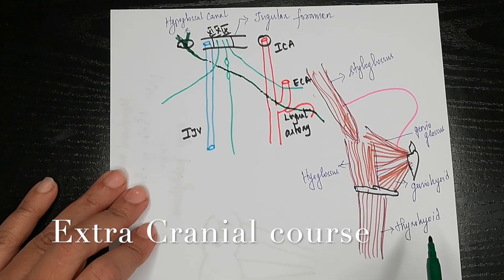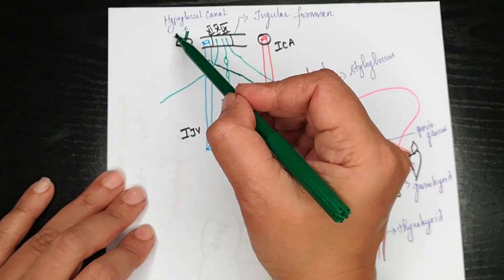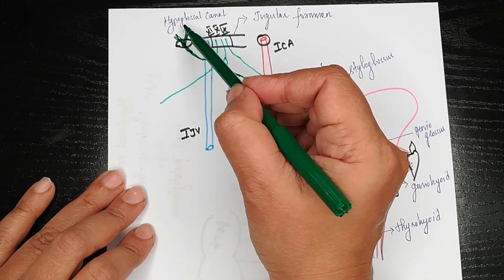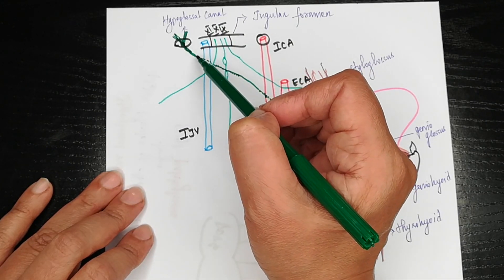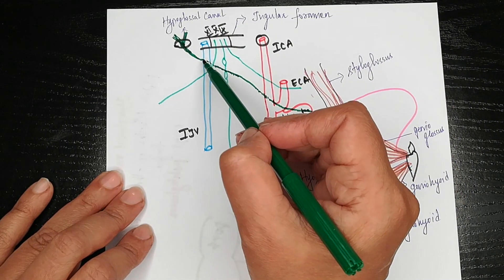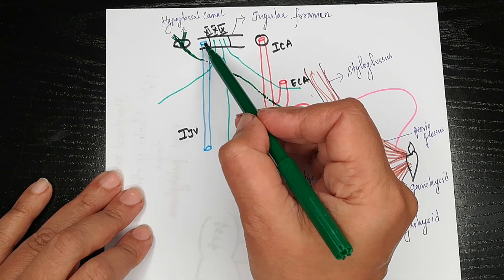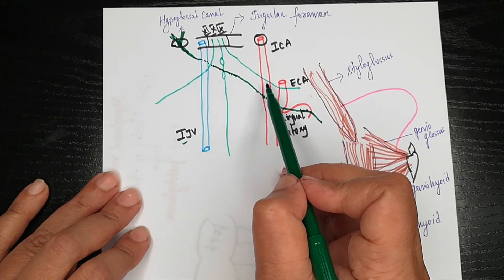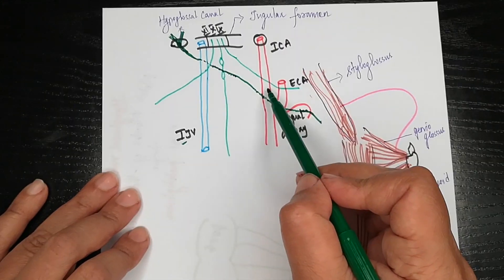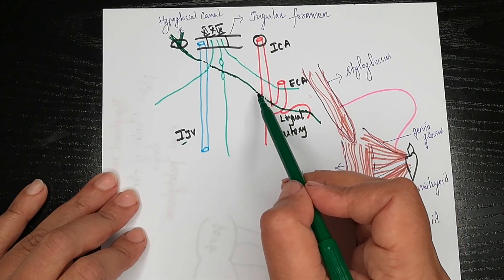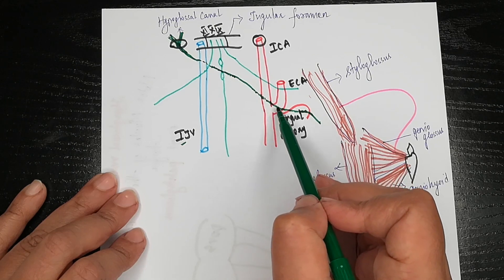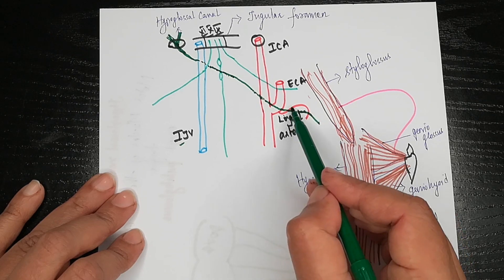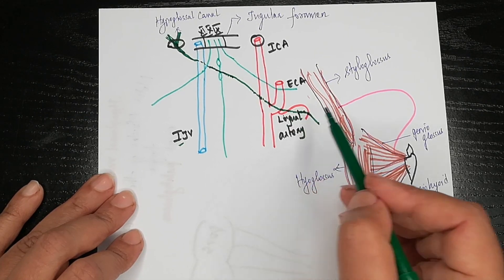Looking at the extracranial course of the hypoglossal nerve: initially the rootlets unite to form two roots, and then the two roots unite in the hypoglossal canal to form the hypoglossal nerve. Initially it runs posteriorly to the internal jugular vein, then crosses the vagus nerve to lie between the internal jugular vein and the internal carotid artery, and then crosses the internal carotid artery and enters the substance of the tongue by crossing the loop formed by the lingual artery.